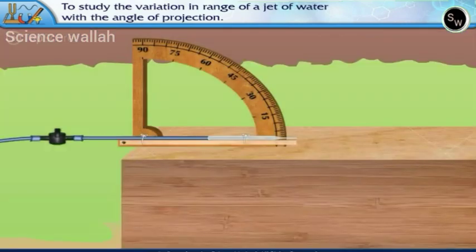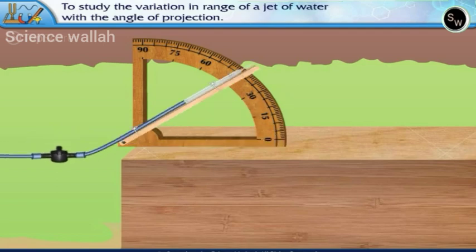This is a classic demonstration designed to show that the range of the water jet in the Earth's gravitational field is maximum when the angle of ejection is equal to 45 degrees.